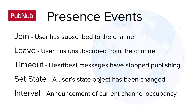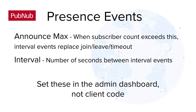Set state is an event that fires when a user's state is being set, and all channel subscribers will receive the event. Interval is an announcement of how many users are currently in a channel. The interval event will be sent if the number of subscribers exceeds the announce max number, and both the announce max and interval values are set in your PubNub dashboard.